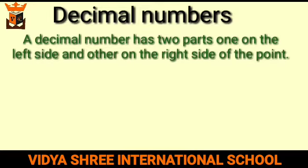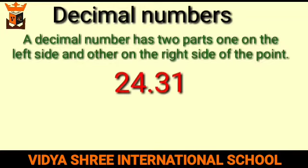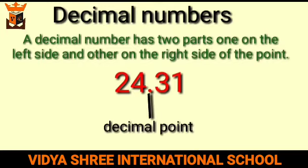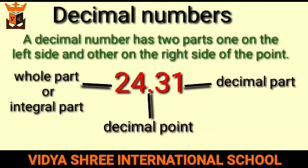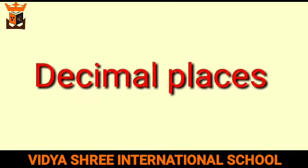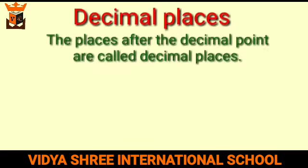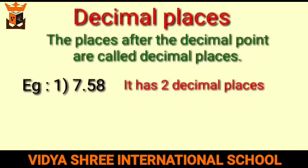A decimal number has two parts: one on the left side and the other on the right side of the point. Consider the decimal 24.31. The dot between 24 and 31 is called the decimal point. The number to the left of the decimal point is called the whole part or integral part. The number to the right is called the decimal part. The places after the decimal point are called decimal places. For example, in 7.58, there are two decimal places.